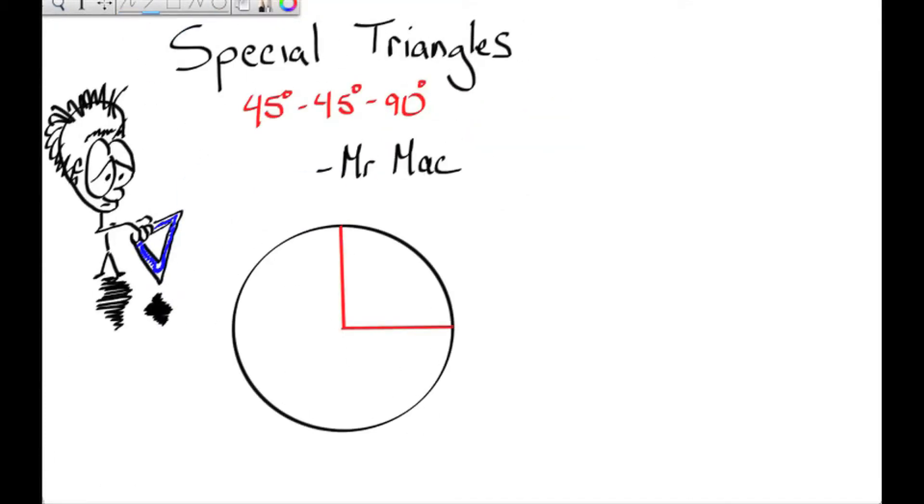If we have a circle of radius 1 and I put two radii together with a 90-degree angle in between them, I end up getting a 45-45-90 right isosceles triangle.